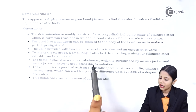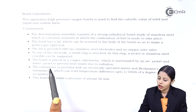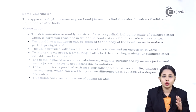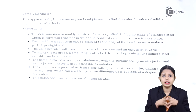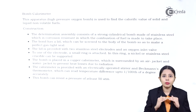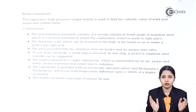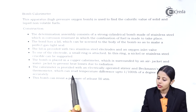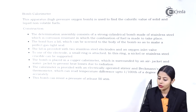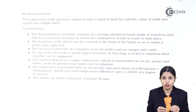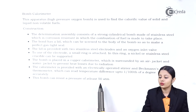The bomb is placed in a copper calorimeter which is surrounded by an air jacket and a water jacket to prevent heat losses due to radiation. These two jackets ensure that heat inside the calorimeter remains inside and there is no transfer of heat from inside to outside or vice versa — maintaining optimum temperature. The calorimeter is provided with an electrically operated stirrer and a Beckmann thermometer which can read temperature differences up to one-hundredth of a degree accurately. This bomb can resist pressure of at least 50 atmospheres.